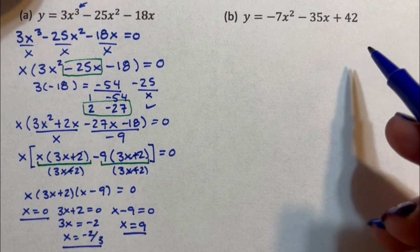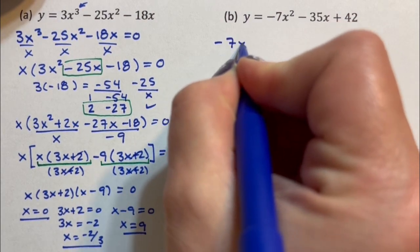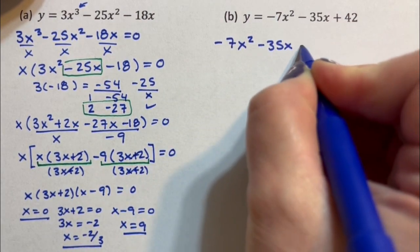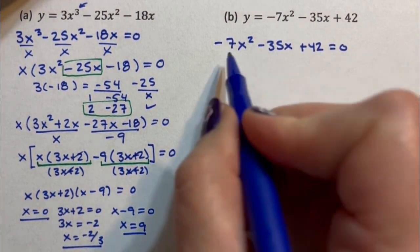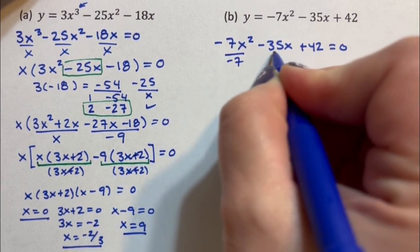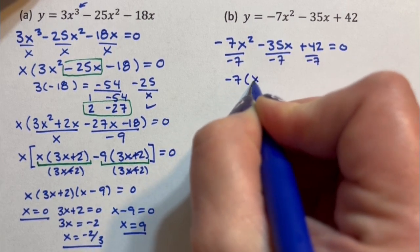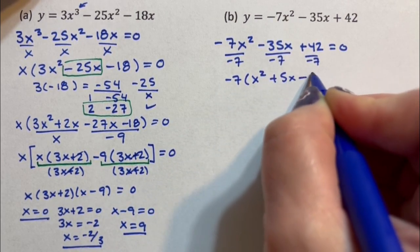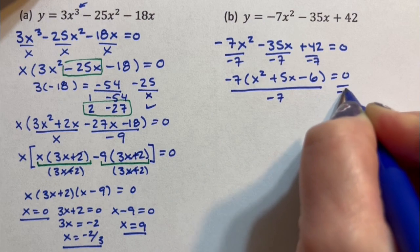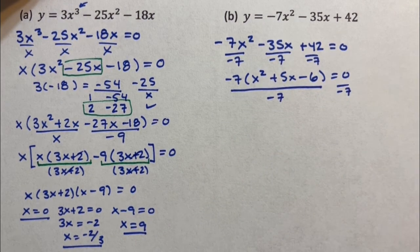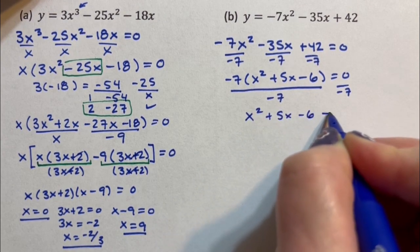For my second example, I have -7x² - 35x + 42 = 0. For this one, I can factor out a -7, because there's a -7 here, a -7 here, and a -7 here. I end up with x² + 5x - 6. But I'm going to go and now divide both sides by -7. I can only do that because I have an equation. If I didn't have an equation, I couldn't do that. x² + 5x - 6 = 0.